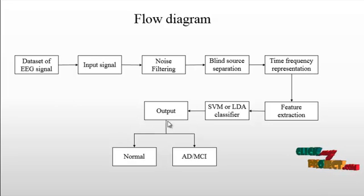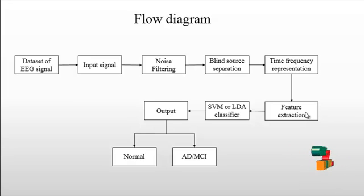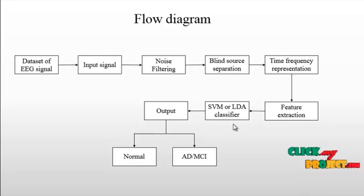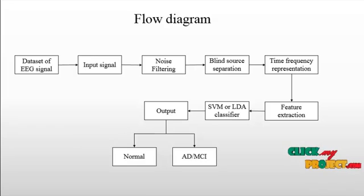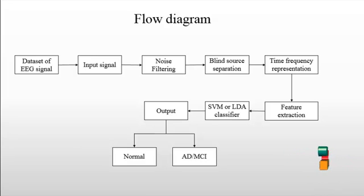Finally, feature extraction is calculated. In the feature extraction process, features are extracted using mean, standard deviation, and entropy values. Then classification is performed using the SVM (support vector machine) classifier to identify the signal as normal or abnormal.